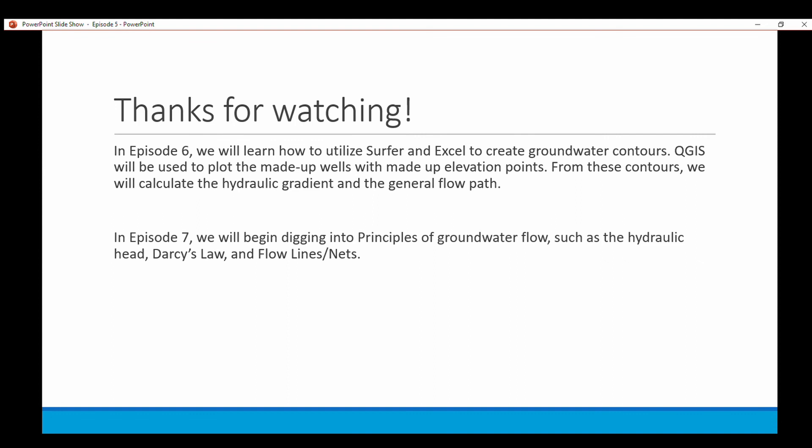I'll show you how to take that information and put it into Surfer to create contours and then we'll export that into QGIS. From these contours we will calculate the hydraulic gradient and then determine the general flow path. And then in Episode 7 we will start digging into the principles of groundwater flow such as the hydraulic head, Darcy's Law, and flow lines and flow nets.